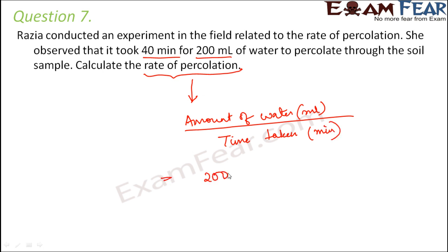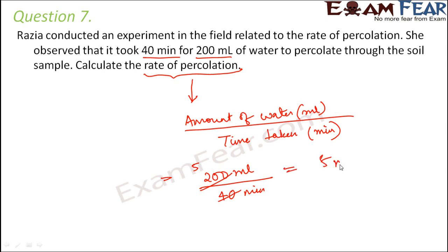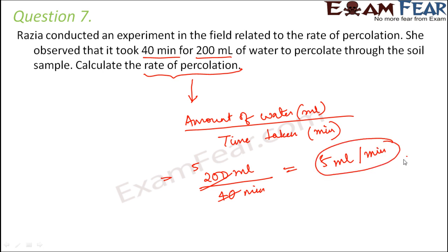Based on that, looking at this question, the amount of water is 200 milliliters and time taken is 40 minutes. So the percolation rate is going to be 5 milliliters per minute.